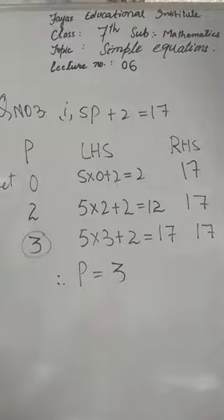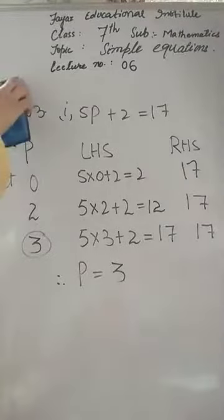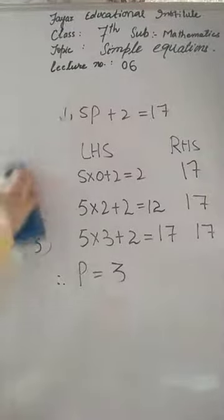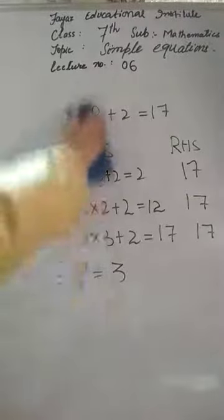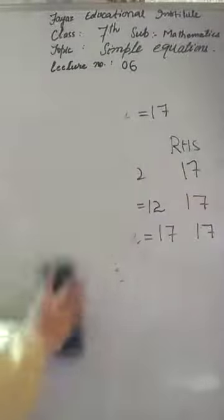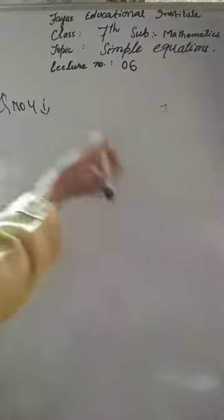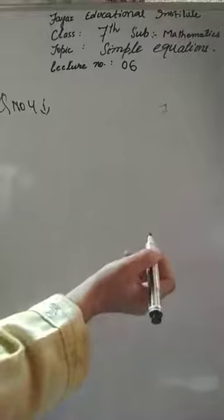The remaining questions are to be done in the same way. Now we will do question number 4: Write the equation for the following statements. A statement means a sentence is given and you have to change it into an equation. Let's see how we change these equations. Question number 4, part 1: The sum of numbers x and 4 — 'sum' means plus operation — so the equation will be x plus 4.